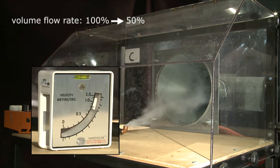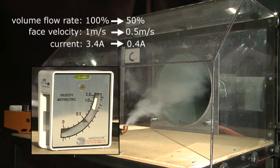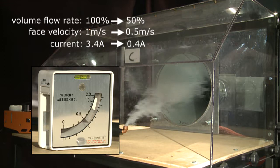The volume flow rate has been halved. This reduces face velocity from 1 meter per second to 0.5 meters per second. The current has been reduced from 3.4 amps to 0.4 amps, a power saving of 88%, which lowers the running cost of the LEV system and reduces its carbon footprint.